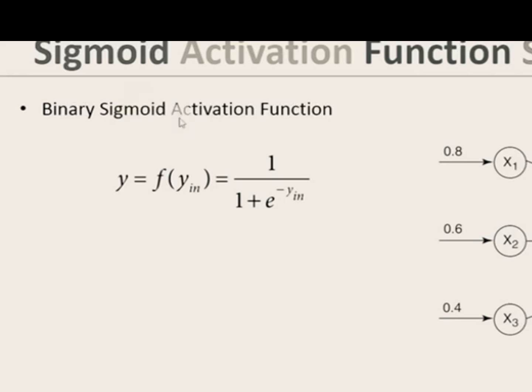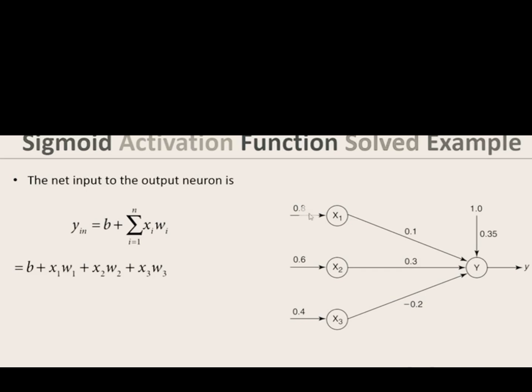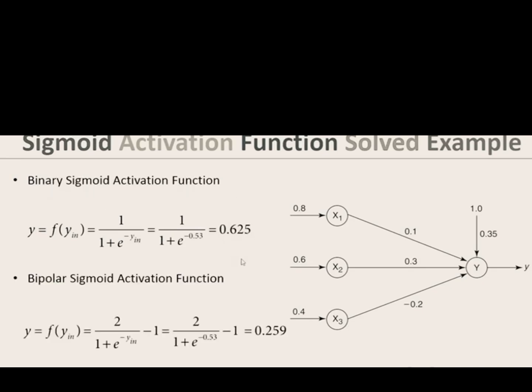The binary sigmoid activation function is given by y equal to 1 divided by 1 plus e to the power of minus y_in. It is expanded and written as b plus x1·w1 plus x2·w2 plus x3·w3 to product the inputs with their respective weights and then add the bias value. Final answer 0.53. We have written the formula 1 divided by 1 plus e to the power of minus y_in. In that we can get the output as 0.625. This is for binary sigmoid activation function.